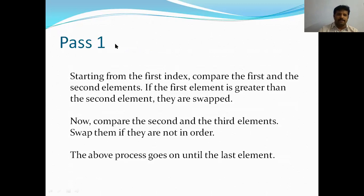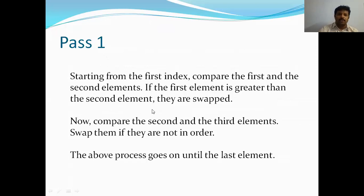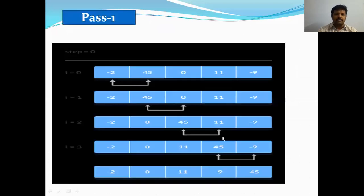Let us explain bubble sort with an example. In pass one, starting from the first index, compare the first and second elements at a[0] and a[1]. If the first element is greater than the second element, swap them. Then compare the second and third elements — if the second is greater than the third, swap them. This process continues until the last element.